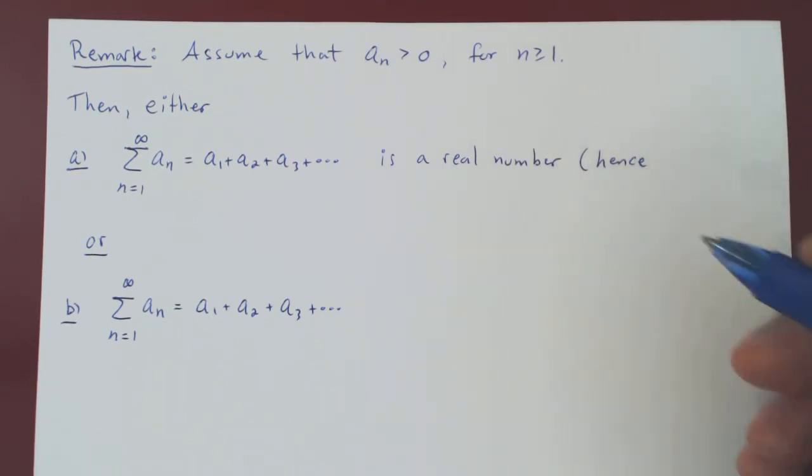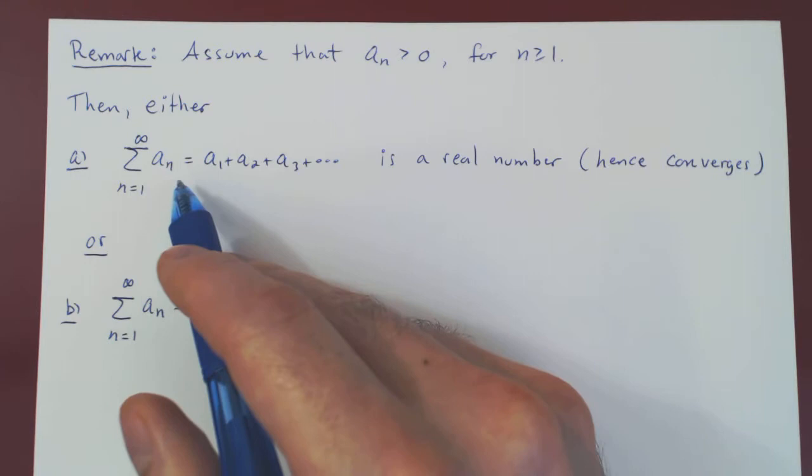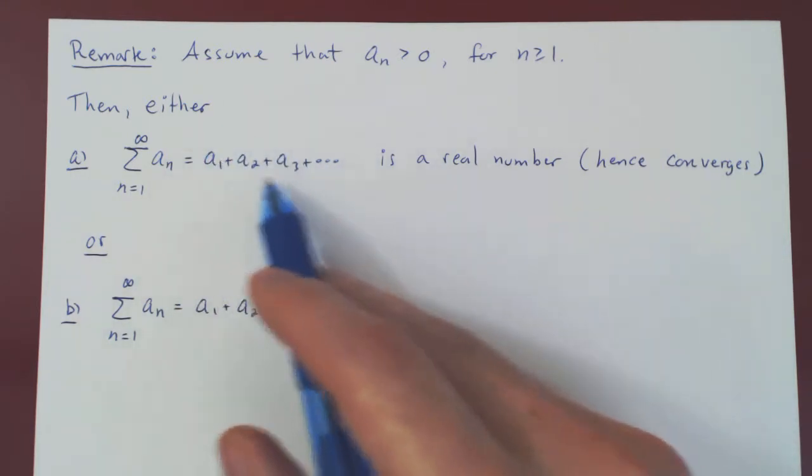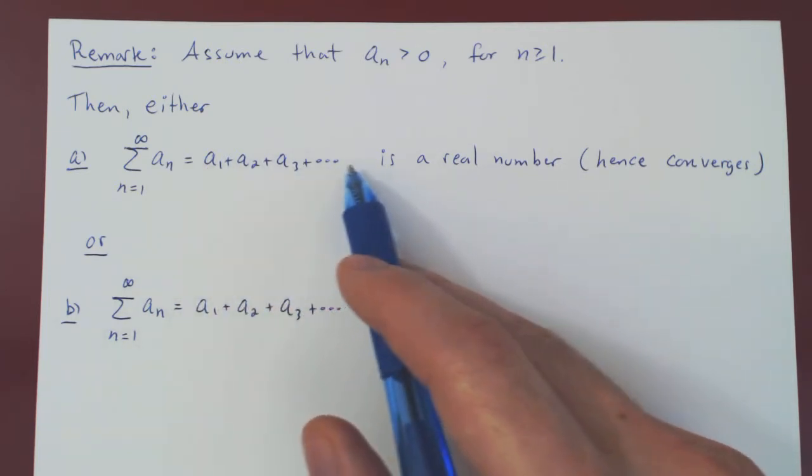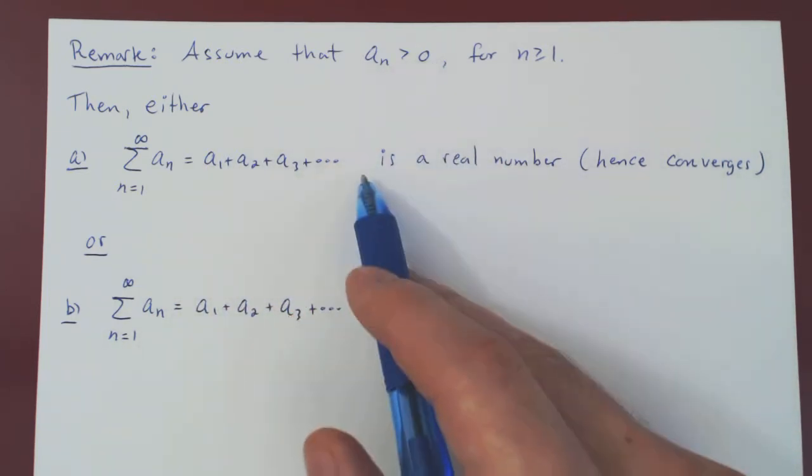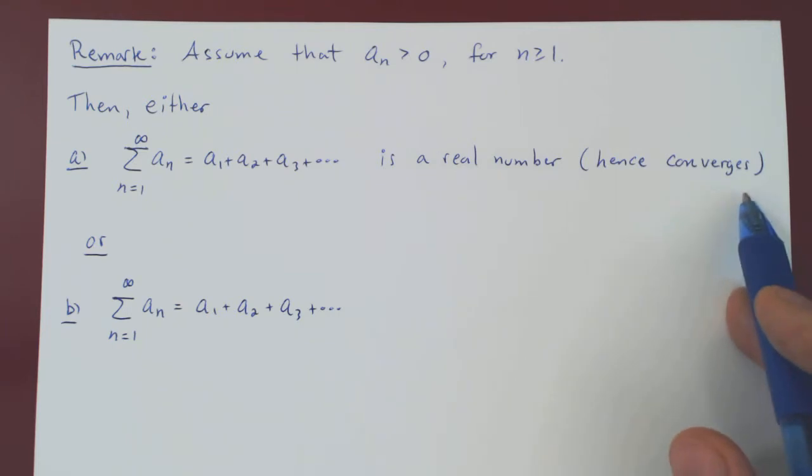Again, the technical term here is convergence. So if our sequence of partial sums is bounded, we have a convergent series. So if we add all the terms in our sequence, we get a real number, so the series converges.